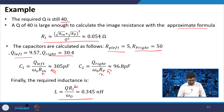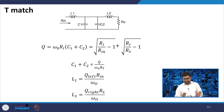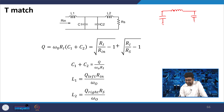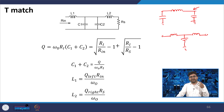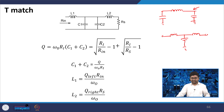Similar to pi match, there is a T match. The only difference is: in pi match you have one inductor and two capacitors, while in T match you have two inductors and one capacitor. You can also have a T match with two capacitors and one inductor.